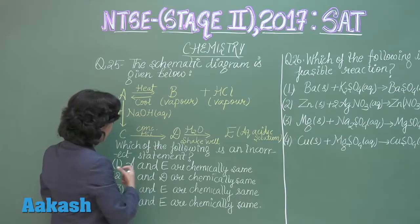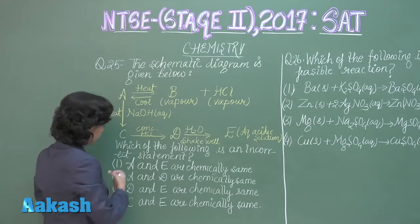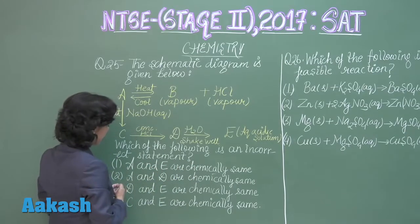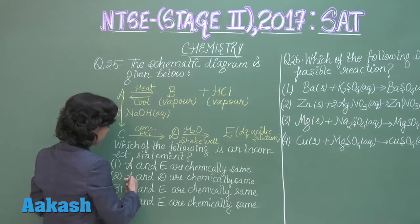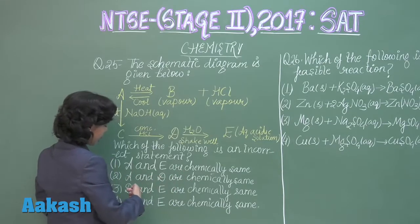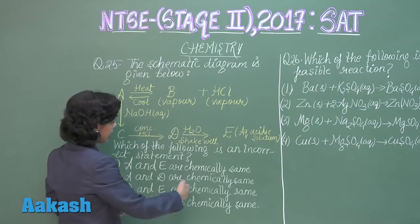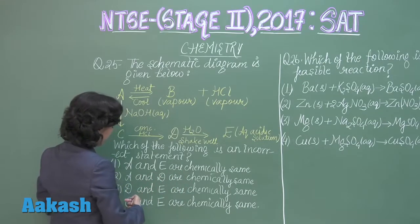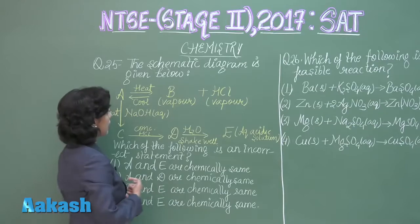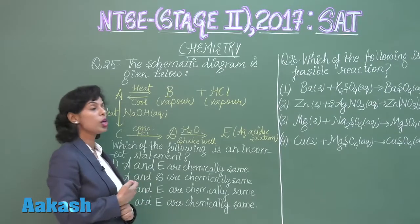Let's have a look at the options. The first option is A and E are chemically same. The second option is A and D are chemically same. Third, D and E are chemically same. And fourth, C and E are chemically same.